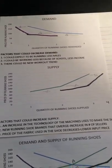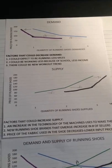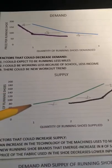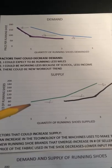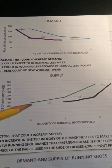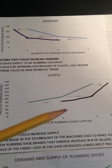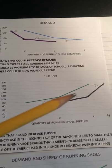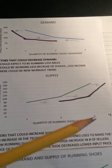Now we'll look at the supply side of the market for running shoes. At a price of $75, the quantity of running shoes supplied is going to be 1. At a price of $100, the quantity of running shoes supplied is 2. And at a price of $175, the quantity of running shoes supplied is 3.